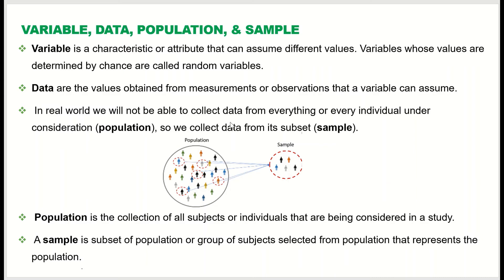In the real world, we are not able to collect data from everything or every individual under consideration, which is called the population. For example, if I want to study the GPA of university students in America, it is impossible to go to each individual and collect data. So what we do is collect data from a subset — we select a group of university students and collect their GPA.